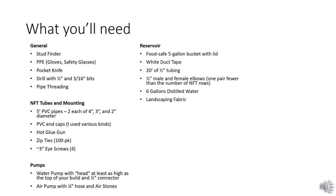For your reservoir, you'll need a five-gallon food-safe bucket with lid, white duct tape, and 20 feet of half-inch tubing. To prevent tube crimping between NFT tubes, pick up half-inch male and female elbows - one pair fewer than your number of rows.